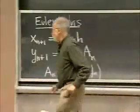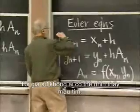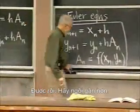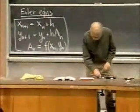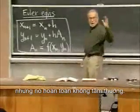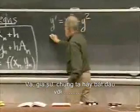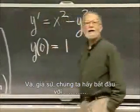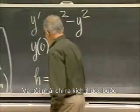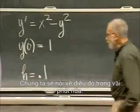Let's try an example. My example is going to be the equation y' = x² minus y², and let's start with y(0) = 1. So this is my initial value problem — that pair of equations. And I have to specify a step size. Let's take the step size to be 0.1. You choose the step size, or the computer does — we'll have to talk about that in a few minutes.